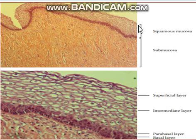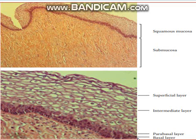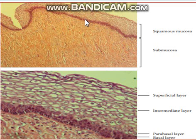The squamous mucosa, that is the uppermost layer of the vagina, is further divided into four layers. The lowermost layer of this squamous mucosa is called the basal layer. This basal layer is anchored to the basement membrane that separates the squamous mucosa from the submucosa.